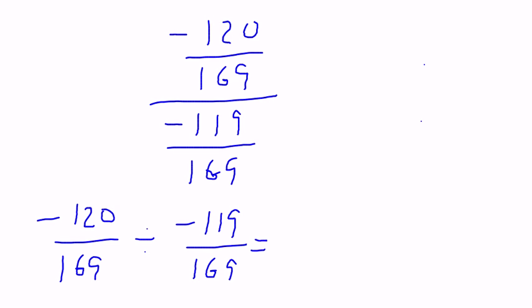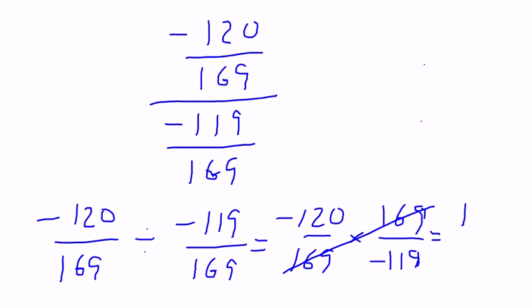It's the same as multiplying by the reciprocal. So negative 120 over 169 times 169 over negative 119. When I multiply these, the 169s will cancel, the negative signs will cancel, and we're left with 120 over 119.